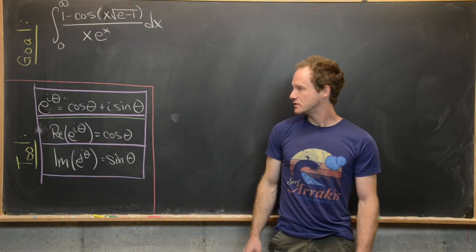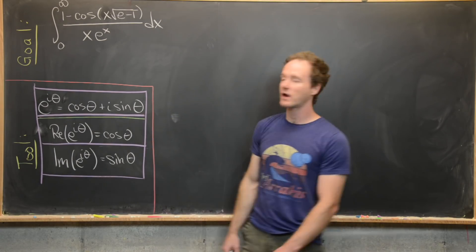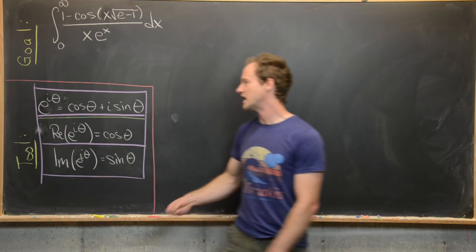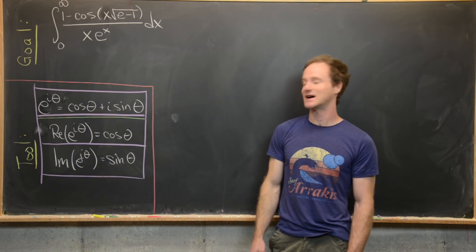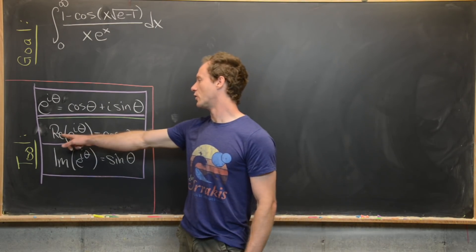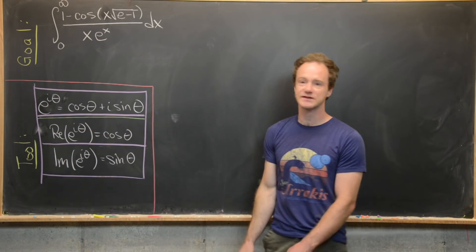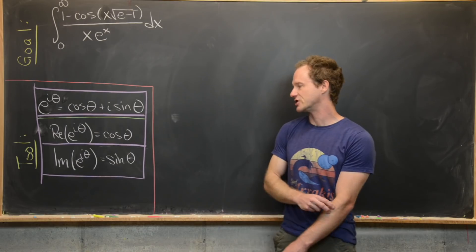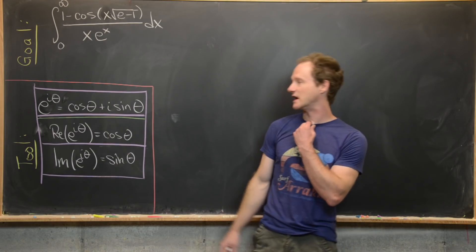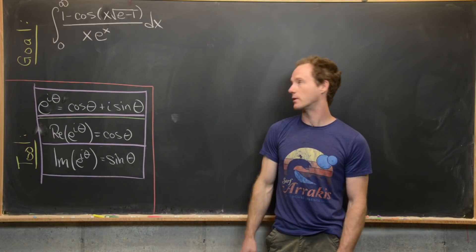We're going to make use of Euler's formula, which says that e to the i theta is equal to cosine theta plus i sine theta. That means the real part of e to the i theta is cosine theta, and the imaginary part of e to the i theta is sine theta, where theta is a real number.